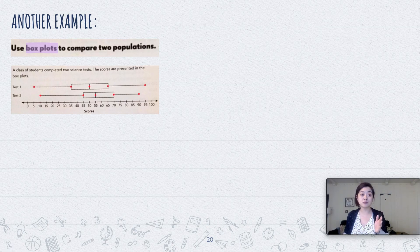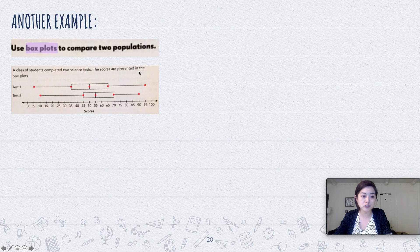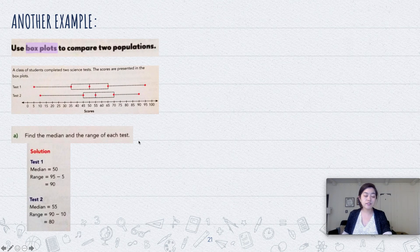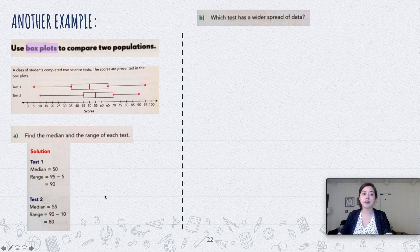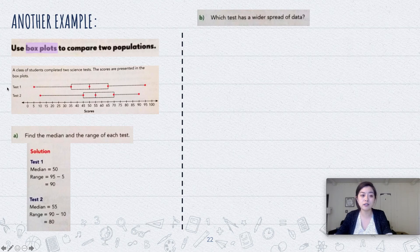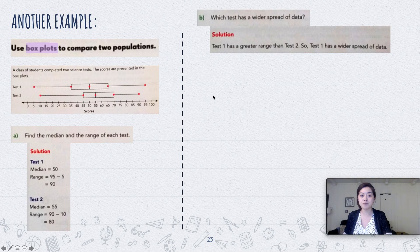Now let's use box plots to compare two populations again. A class of students completed two science tests, and the scores are in the box plots. The median for Test 1 is 50 and for Test 2 is 55. The range for Test 1 is 90 and for Test 2 is 80. Since the bigger the range, the wider the spread, Test 1 had a wider spread of data.